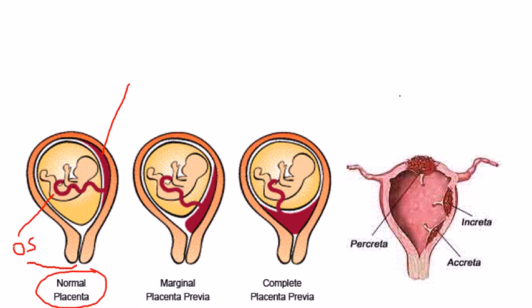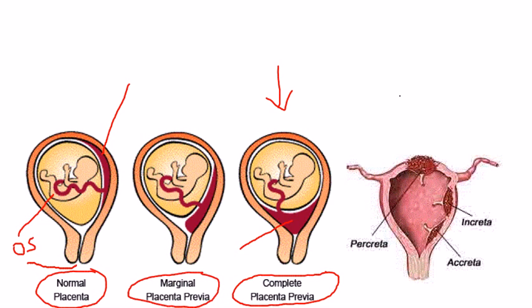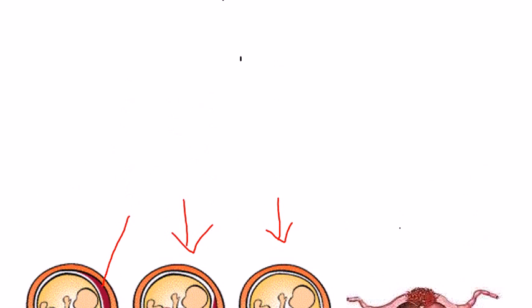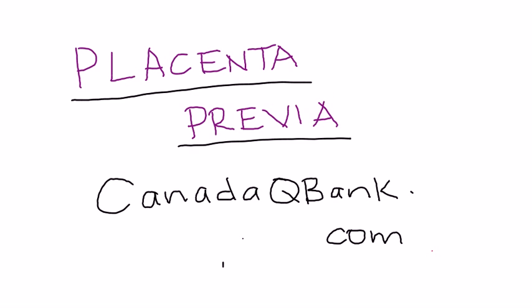A placenta previa is described in this diagram. Complete placenta previa is where the placenta is now covering the entire cervical opening, or cervical os. There's another type called marginal placenta previa, illustrated here, which only covers a part of the cervical os — that's why it's called marginal. So that's placenta previa: an abnormal location of the placenta.